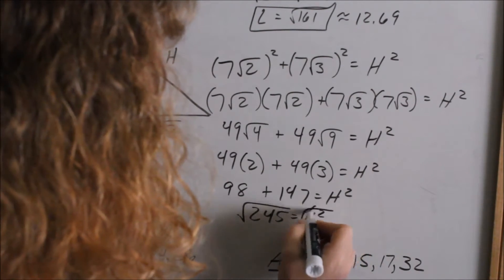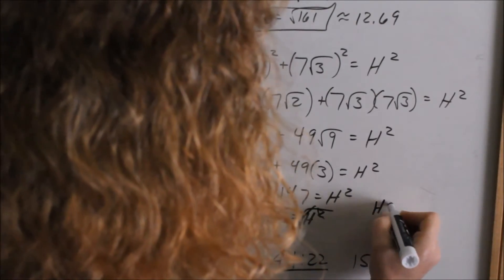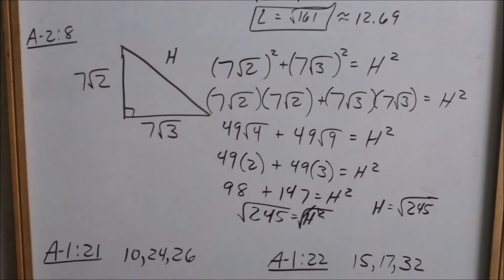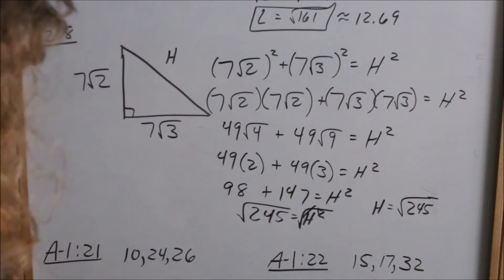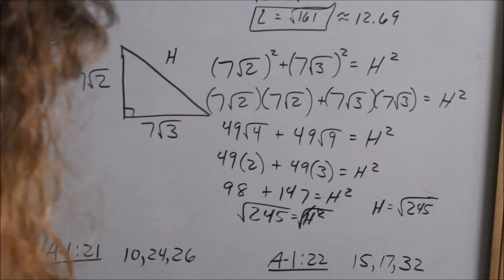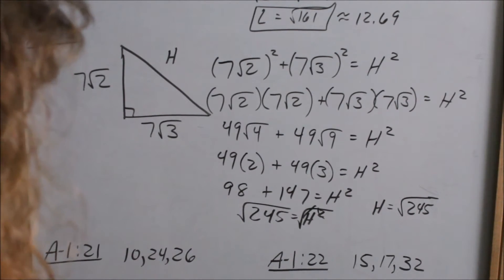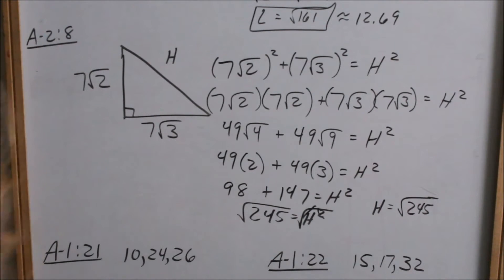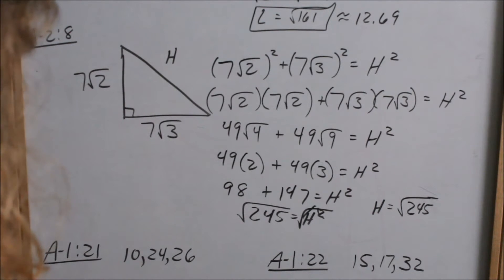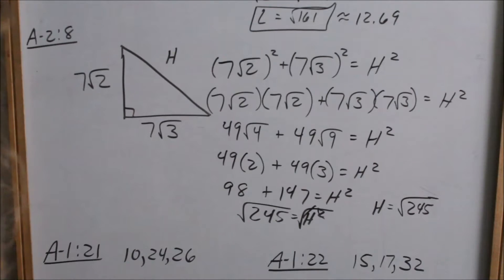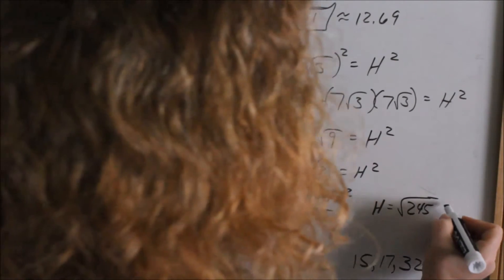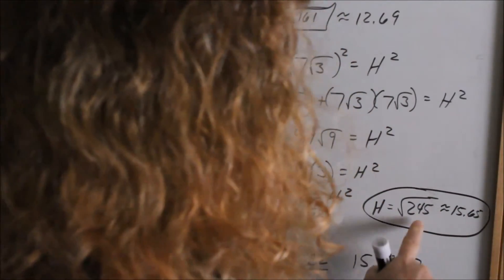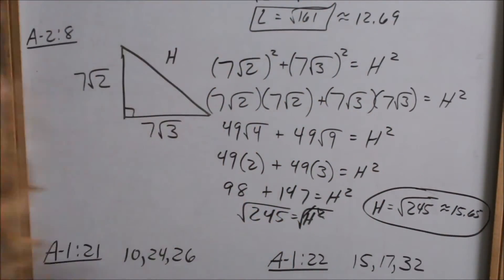Take the square root of each side. The hypotenuse H equals the square root of 245. Let's see if that simplifies. It can't be divided by 25, so I don't think that simplifies. If we took the square root of 245, that is approximately 15.65. Most of the time they want you to leave it in radical form, but simplify the radical.